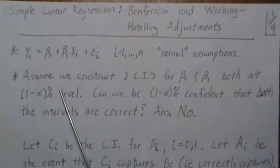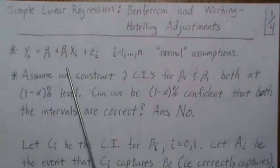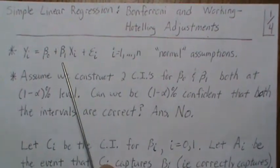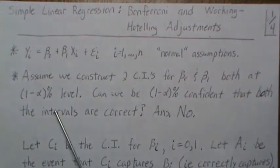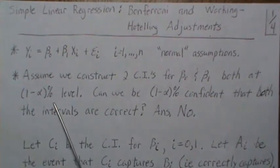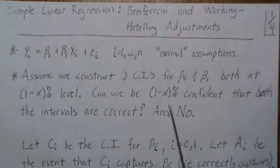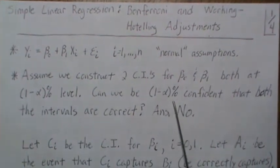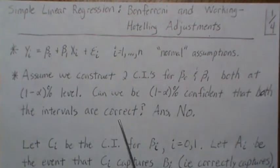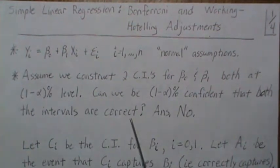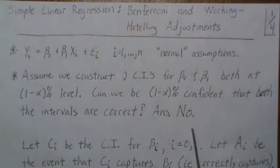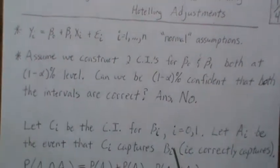If we assume we want to conduct two confidence intervals, one on beta zero and beta one, both at the alpha level or one minus alpha percent level, can we be one minus percent alpha confident that both the intervals are correct, meaning capture the true parameter? The answer is no.